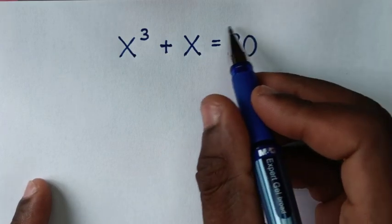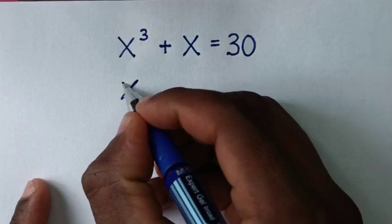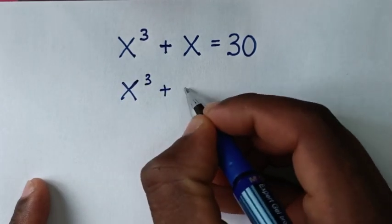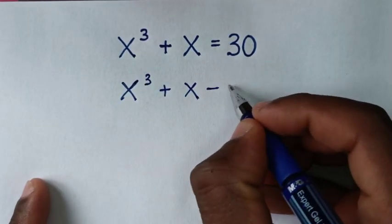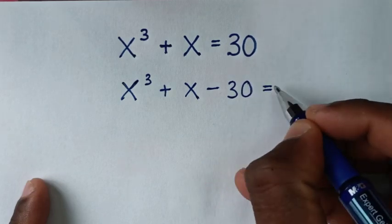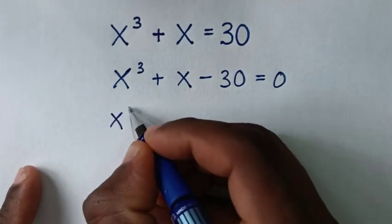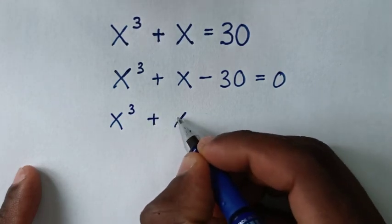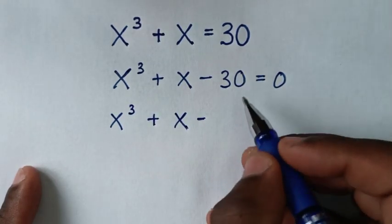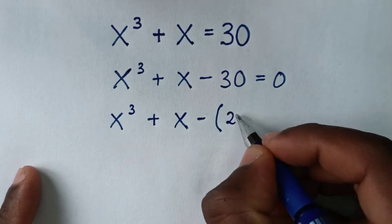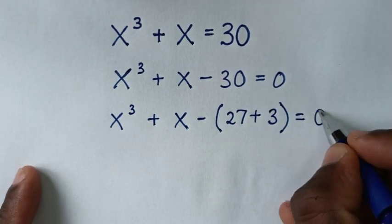In the first step we will take 30 to the left side, so it will be x³ + x - 30 = 0. Now 30 is the same as 27 plus 3.